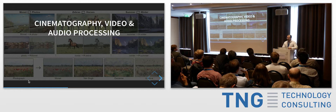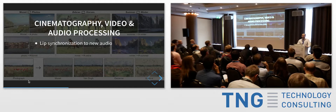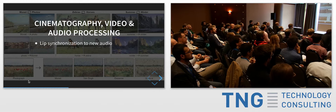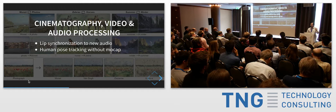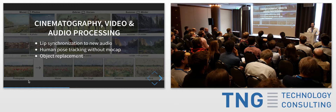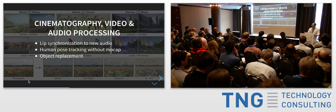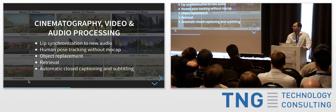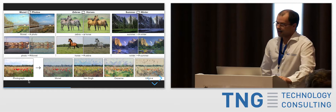In cinematography, video, and audio processing, you can do lip synchronization to new audio — there's "Speech to Obama" as an example, where you input your speech and it generates an Obama face with lip synchronization, even showing wrinkles realistically. Human pose tracking via neural networks is much cheaper than motion capture devices. You can replace objects — think of the Google Translate app where you take a video and get text translations in place. YouTube now does closed captioning automatically using sequence-to-sequence networks.